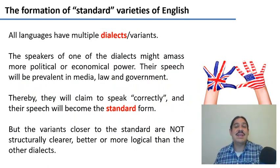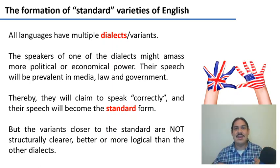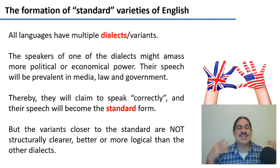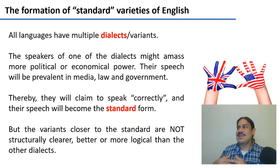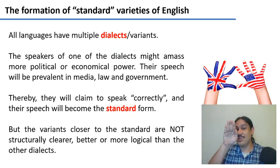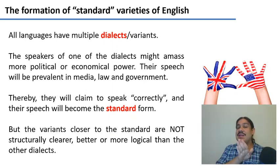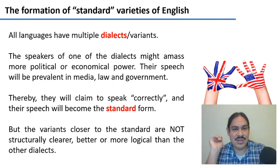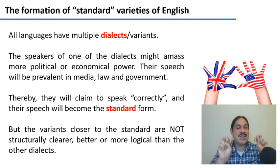Something very interesting happens when you have many dialects of a language. All varieties of human languages are equally complex — they have syntax, morphology, and phonology, and they can express all ideas. But there might be one dialect whose speakers eventually come to amass more power — political or economic. The people who live in London, for example, might start amassing more money and power. Because of this, they're the ones who make the laws, newspapers, and books, and ultimately claim that their dialect is better or more correct than everyone else's — eventually succeeding in claiming they speak the standard form of the language.